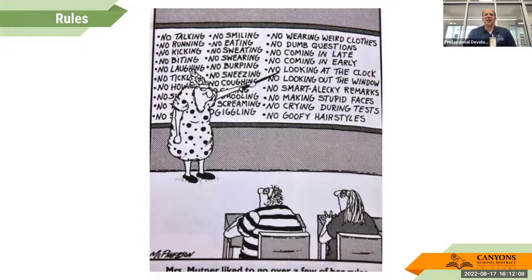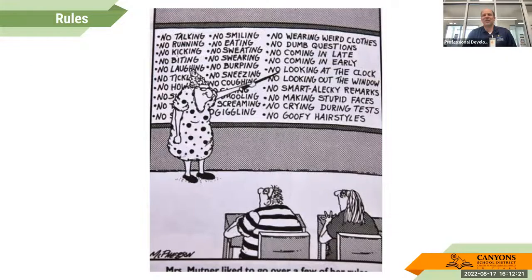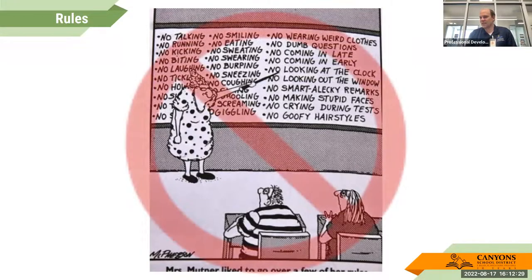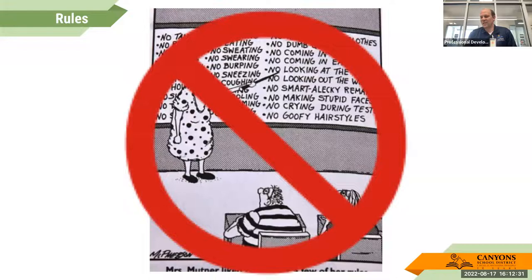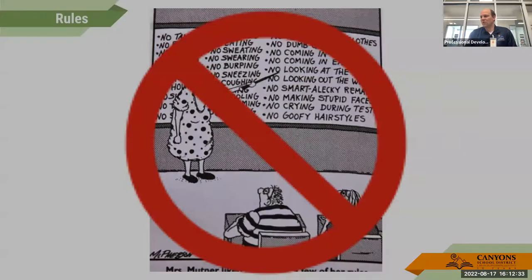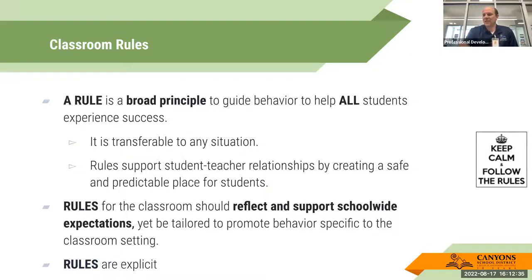A long time ago I learned about something called the dead man rule. If a dead man can do it, it's not a good rule. If you are forbidding something, a dead man can also do that. But if you're saying what students should be doing, that wouldn't pass the dead man rule. We want to avoid rules that only state what not to do, and instead get to rules that will make our classroom work better.